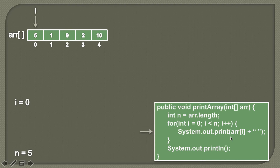Now in order to print the elements on the console, we are doing System.out.print. And in order to access the value at this particular index, we do array, then we provide square brackets, and inside that we provide the index for which we want the value. On the console, it will print five, because i is pointing to the zeroth index, and array[0] will give the value as five.